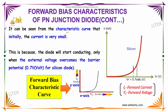It can be seen from the characteristics graph that initially the current is really small. This is because the diode will start conducting only when the external voltage overcomes the barrier potential of 0.7 volts. This is a silicon diode, so it must overcome the barrier potential of the element used.